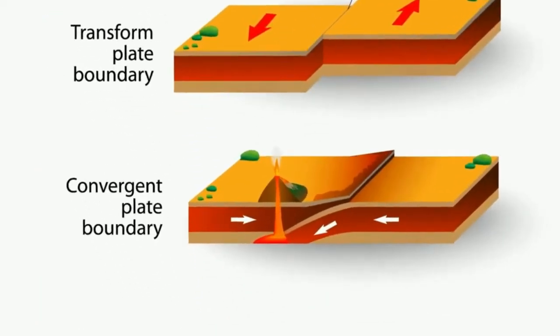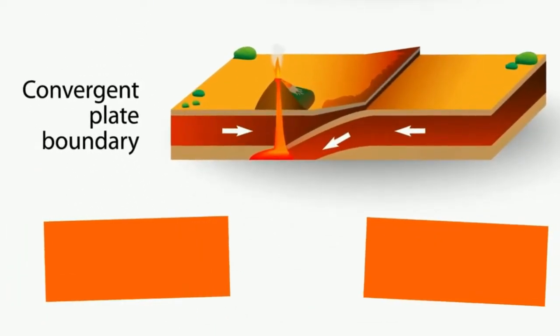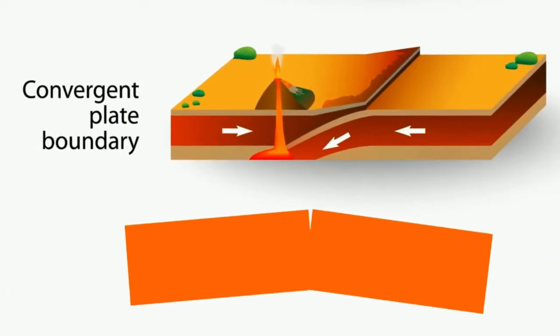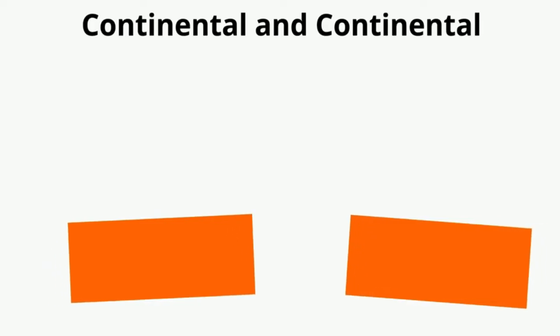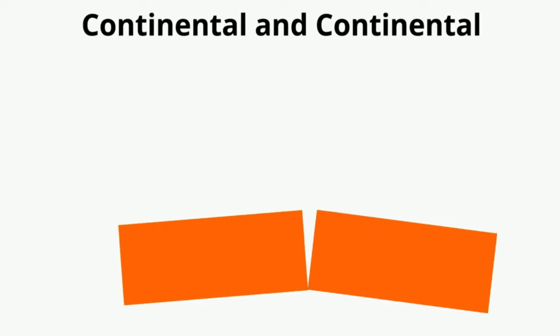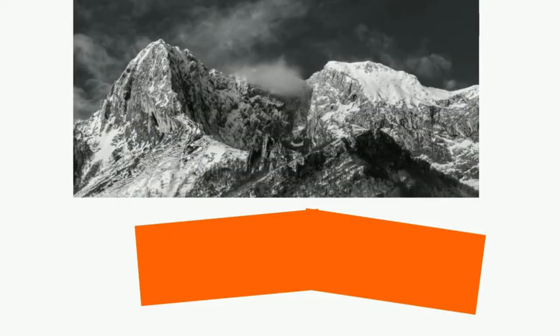Convergent boundaries occur when two plates collide. There are three major types. First is continental to continental. This occurs when two plates of continental crust collide. They buckle and thicken, and this causes mountains to form.